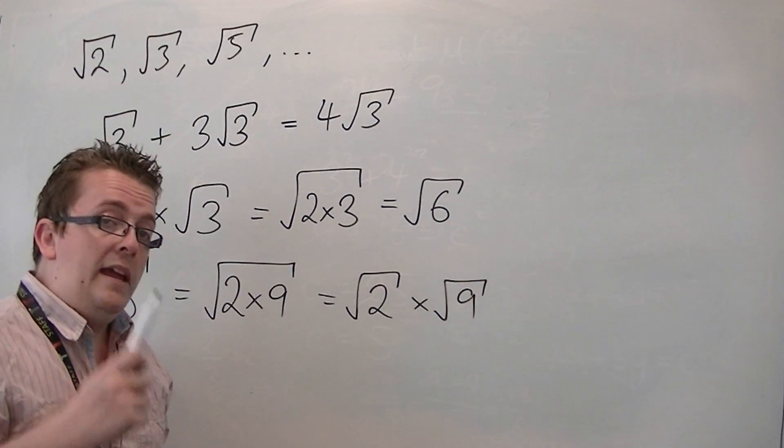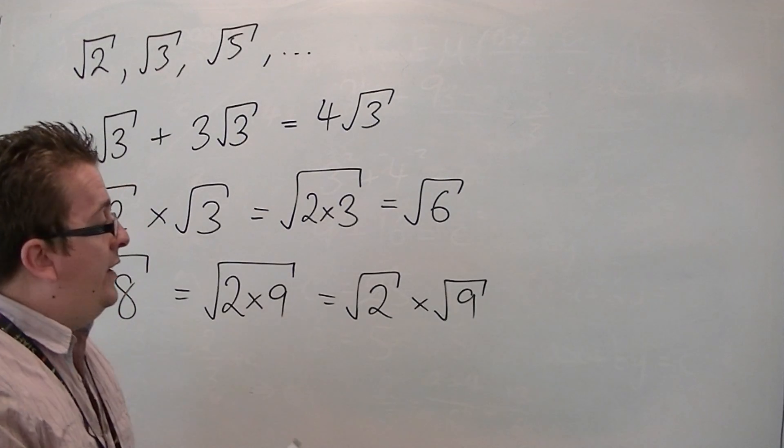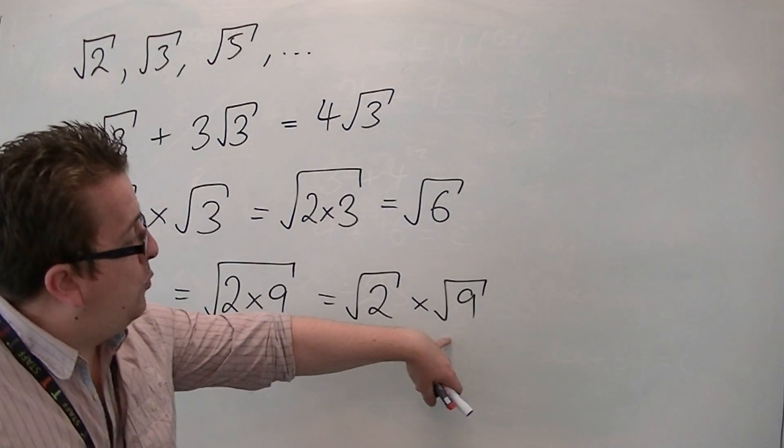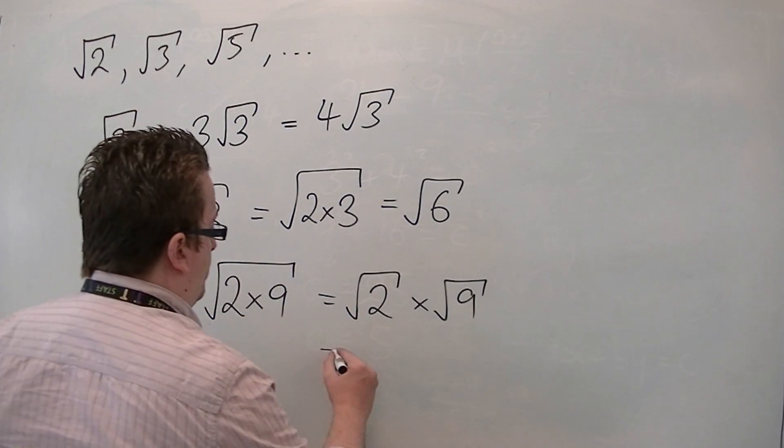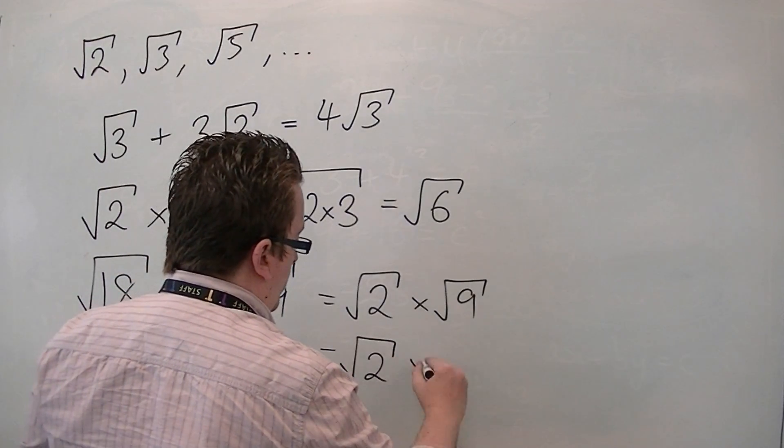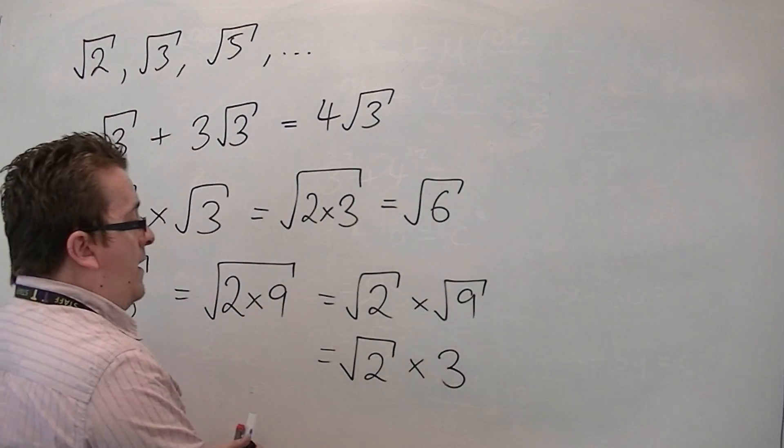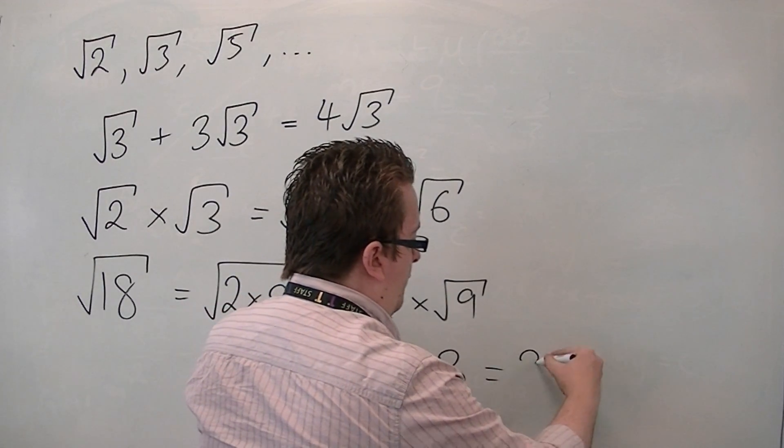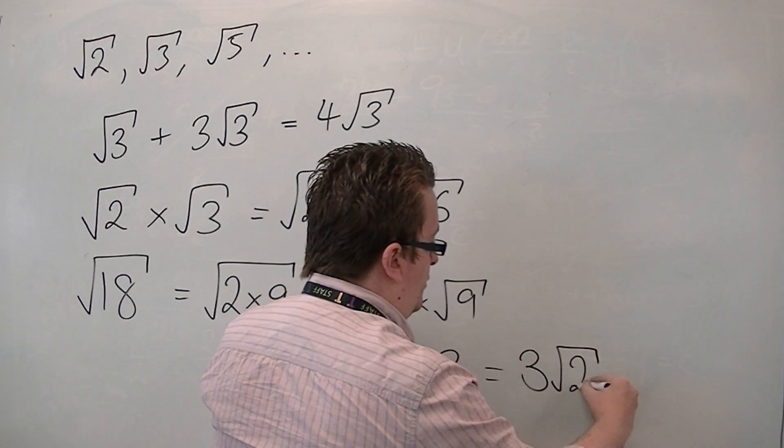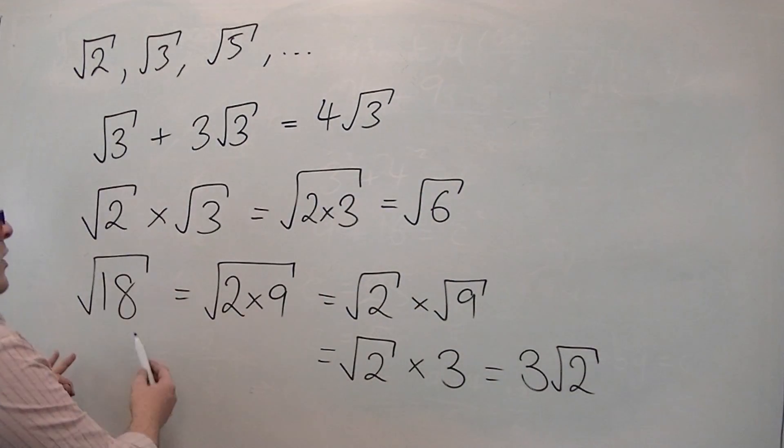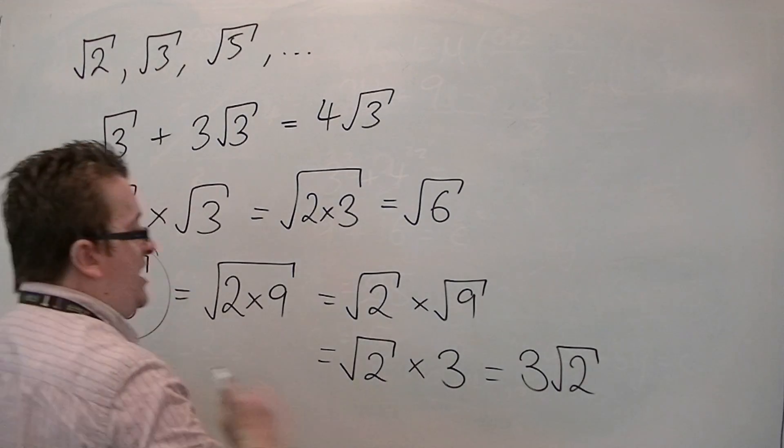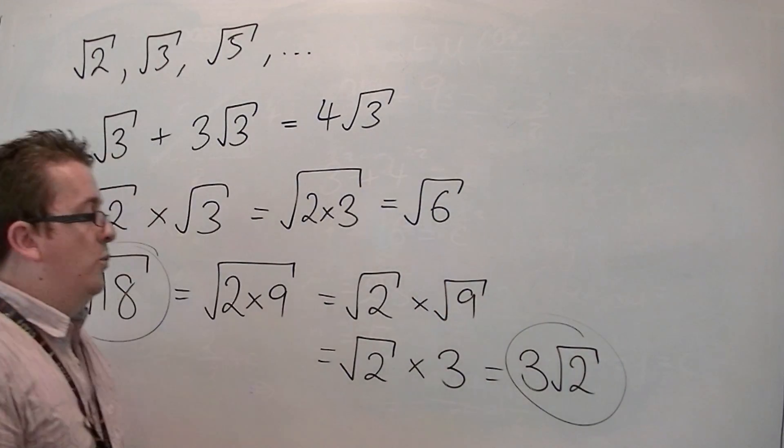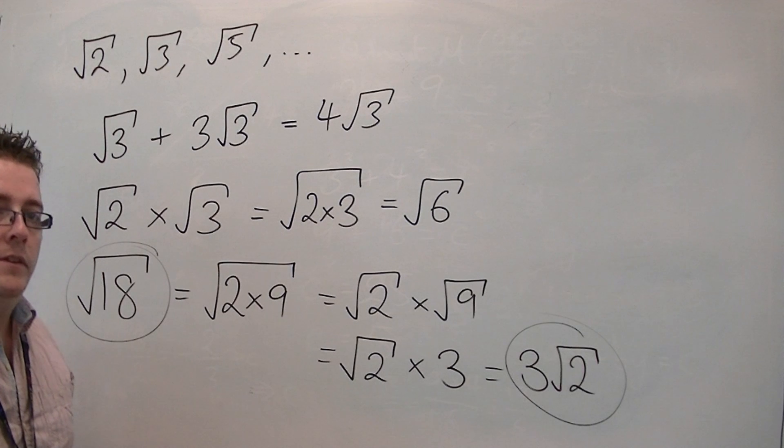Now, 9 is one of those perfect squares. It is a square number. So the square root of 9 is just 3. So you can write this in a much more simplified way as 3 lots of root 2. And this is what we call, going from this root 18 to 3 root 2, we call that simplifying the surd.